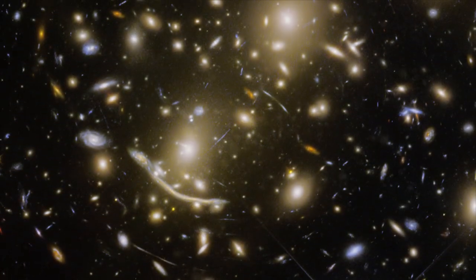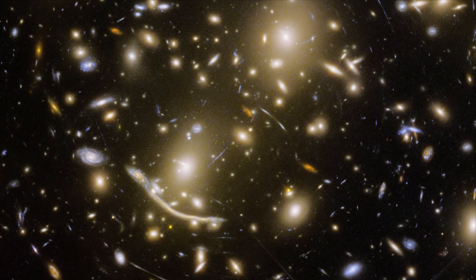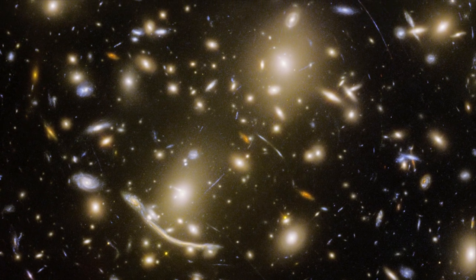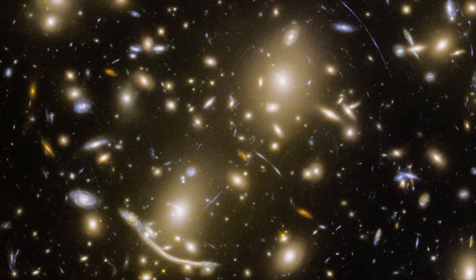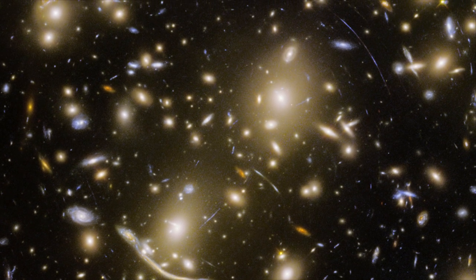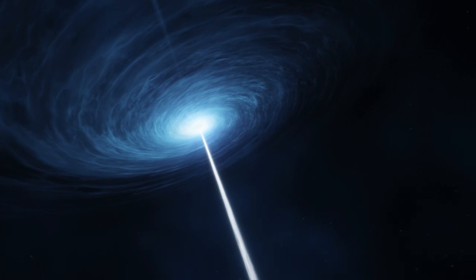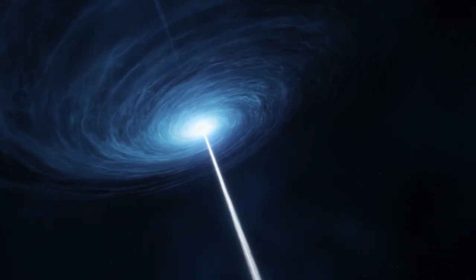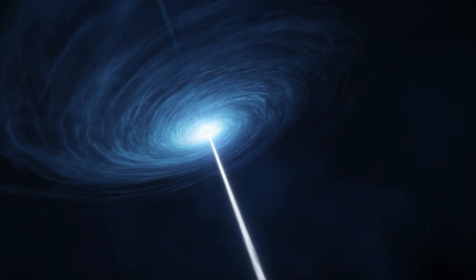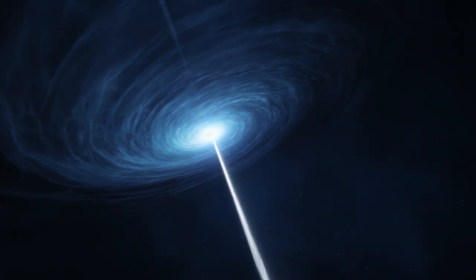How did the radiation of the first stars escape the dusty environment of their parent galaxies to ionize the matter in between galaxies? Were the first stars really powerful enough to re-ionize the universe, or did active black holes play a role as well?